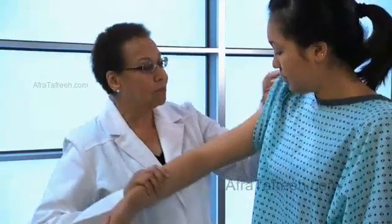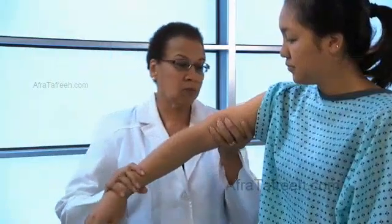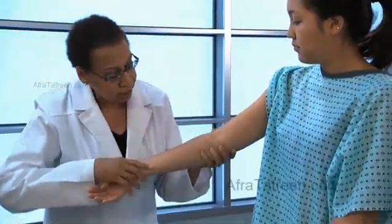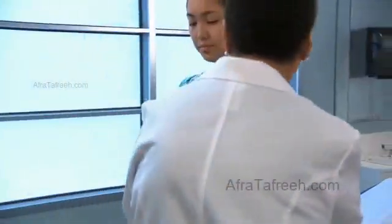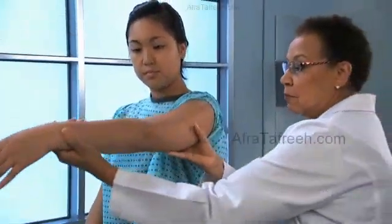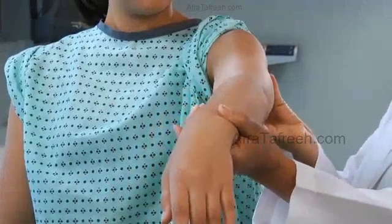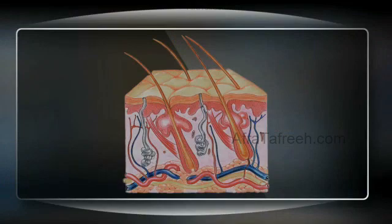The skin is the heaviest single organ of the body. Its major function is to keep the body in homeostasis despite daily assaults from the environment. The skin provides boundaries for body fluids while protecting underlying tissues from microorganisms, harmful substances, and radiation. The skin also modulates body temperature and synthesizes vitamin D. The most superficial layer, the epidermis, is thin and has no blood vessels.